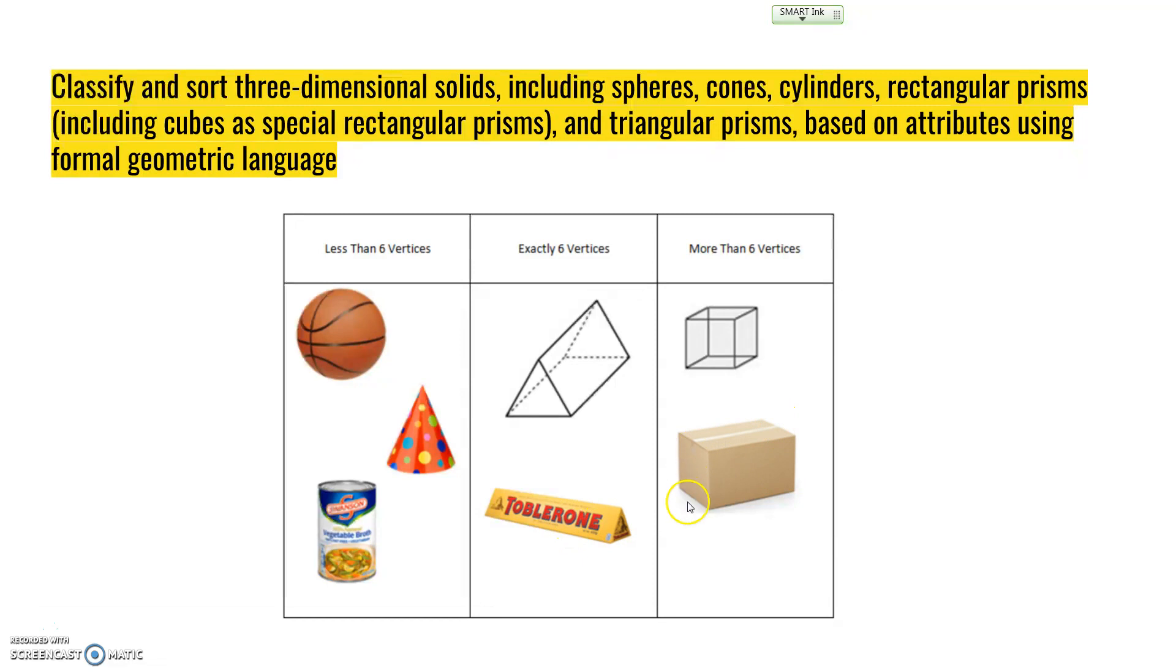This is a rectangular prism. It has one, two, three, four vertices on this end, and five, six, seven, eight on the other end—a total of eight vertices, which is more than six. This shape is also a rectangular prism because it has eight vertices, six faces, and twelve edges. But we give this one a special name because all the faces are congruent—the same size and shape. We call that a cube. A cube could also be called a rectangular prism.